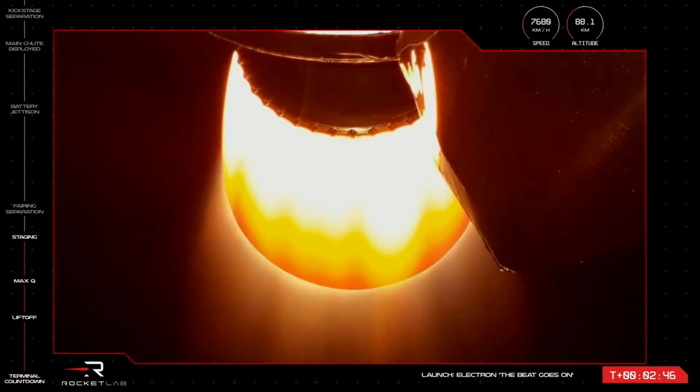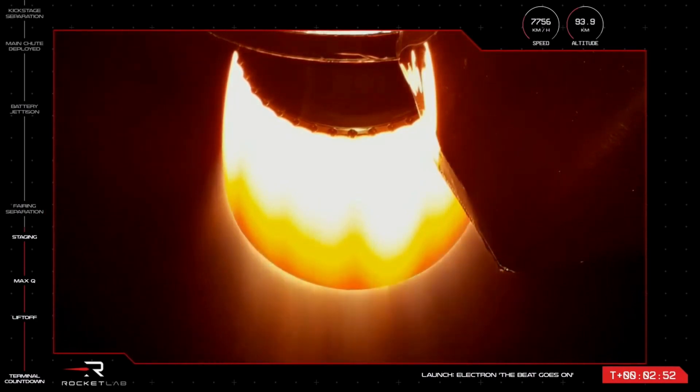Right on cue there with MECO, stage separation and ignition of the Stage 2 Rutherford engine. Next on the checklist is separating the rocket's fairing and jettisoning the nose cone that protects the payloads during flight. This middle of the night launch means it might be too dark to see the separation event on our screen, but keep an eye out anyway as we listen in to Mission Control for the call out.